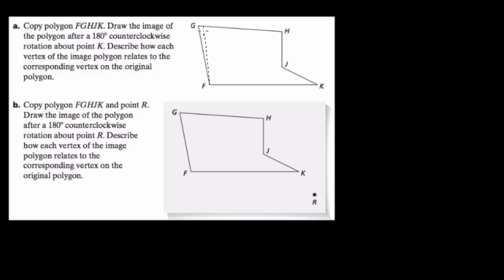And we want to rotate this shape 180 degrees counterclockwise about point K, and then describe what's happening. So here's point K. And we want to rotate 180 degrees counterclockwise.